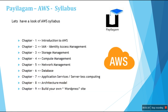Here is the AWS syllabus overview. In Chapter 1 you will learn about introduction to AWS. In Chapter 2 you will learn Identity Access Management to create a user in AWS. Chapters 3, 4, and 5 are the major, very important topics — you are going to learn about storage, compute, and network management.